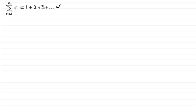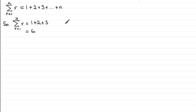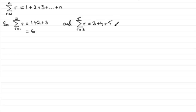For example, if we have Sigma with R going from 1 to 3, this means we sum R equals 1 plus 2 plus 3, giving a total of 6. We're not just restricted to starting from 1 — we could start from another value. If R goes from 3 to 5, we get 3 plus 4 plus 5, giving a total of 12.